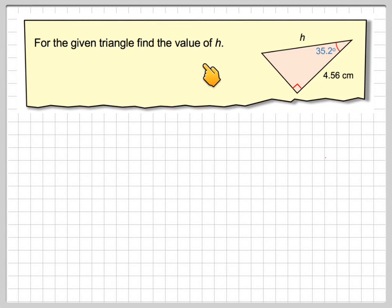For the given triangle, find the value of h. So we've got this length here, h, that we have to find. We know this is 35.2 degrees, and this is 4.56 centimeters.